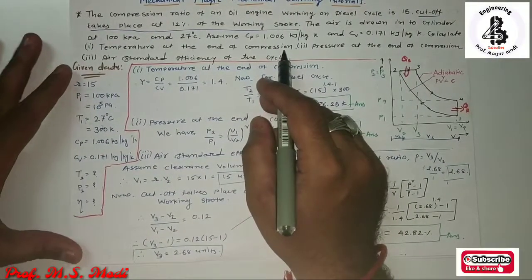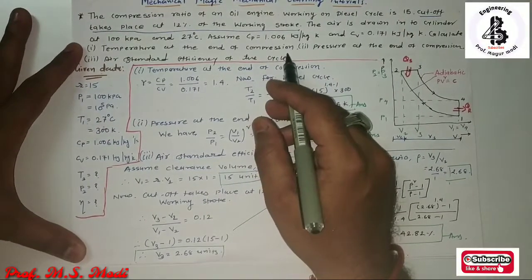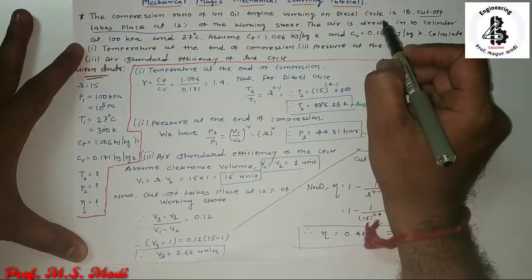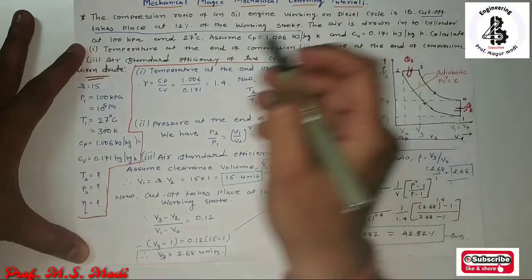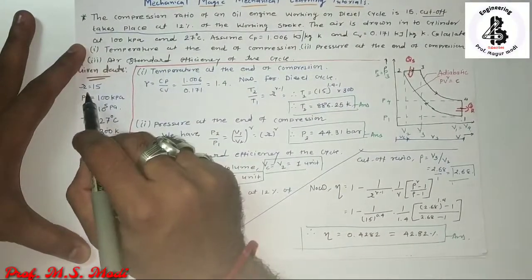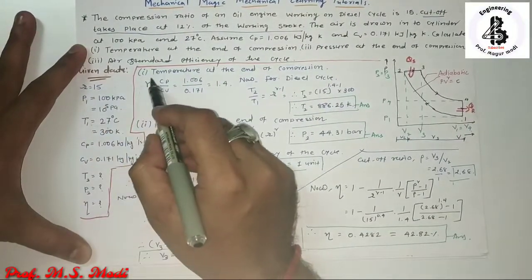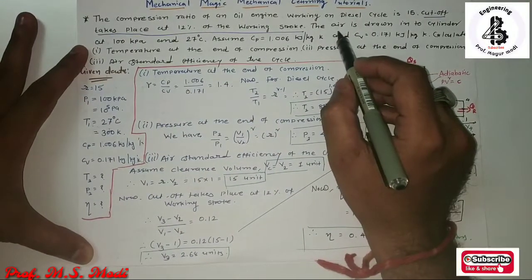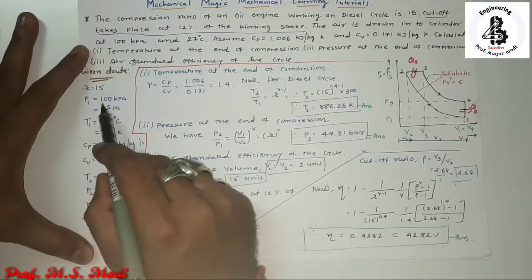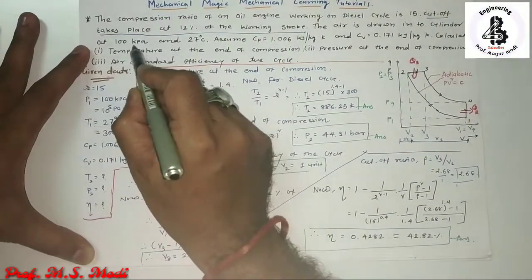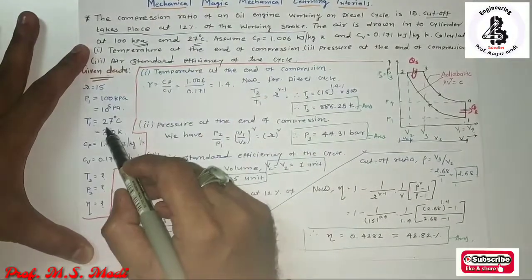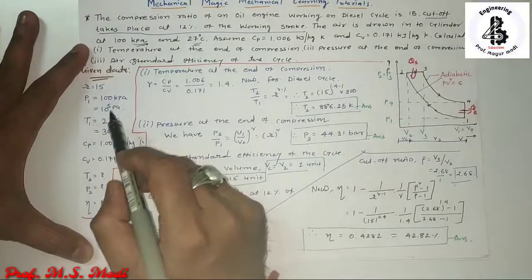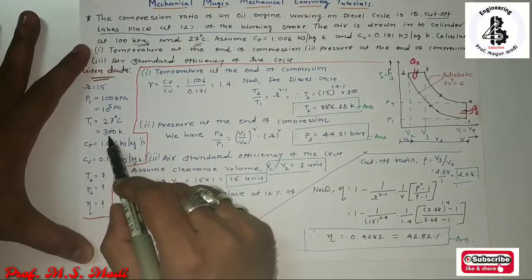From the given data, the cycle is a diesel cycle, and the compression ratio R is equal to 15. The initial pressure P1 is 100 kPa at temperature T1 of 27 degrees centigrade. So finally P1 equals 10 raised to 5 Pascal, and T1 equals 300 Kelvin.